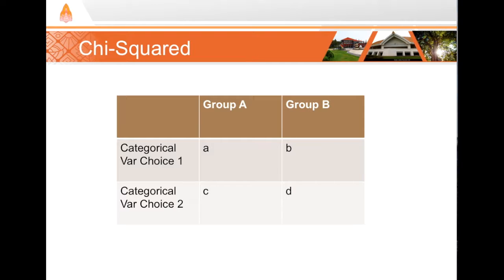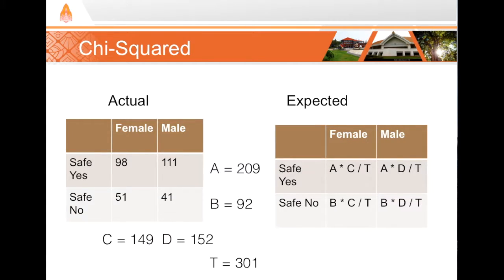We populate our contingency table with counts — not proportions — for each classification. We fill in the observed table with actual values. We had 149 females: 98 said they feel safe, 51 said they didn't. We include row and column totals, and we had 301 total participants. With the observed table constructed, we can now build our expected table.